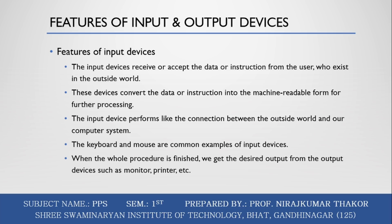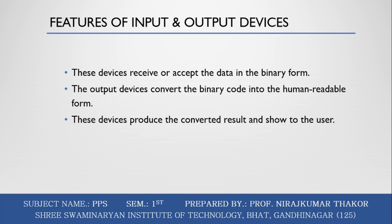When the full procedure is finished, we get the desired output from output devices such as monitor, printer, etc. Output devices produce or generate the desired result according to our input. These devices convert data into human-readable form from binary code. The computer system is linked to the outside world with the help of output devices. Primary examples of output devices are printer, projectors, and monitors. Output devices receive data in binary form and convert binary code into human-readable form.